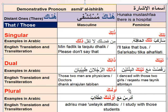For plurals that are far away, whether masculine or feminine, we have only one word: 'ulaika'. For example, 'adrasu maa ulaika atalibu' means 'I study with those students'. 'Adrasu' means 'I study', 'ulaika' means 'those', and 'atalibu' means 'students'.